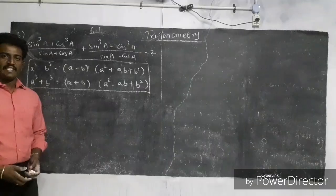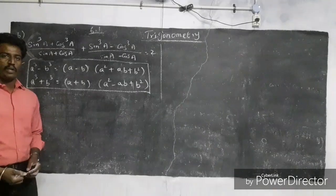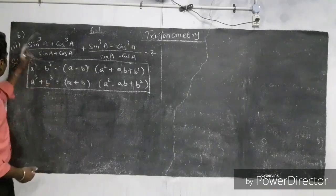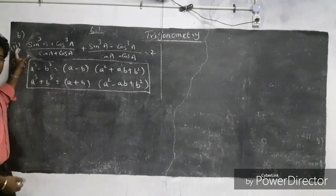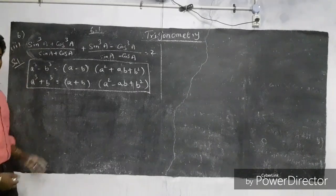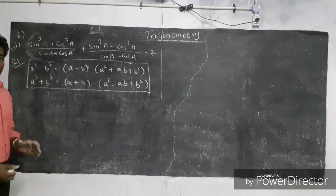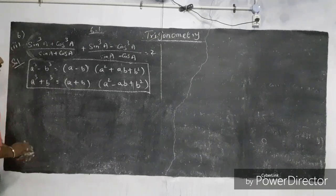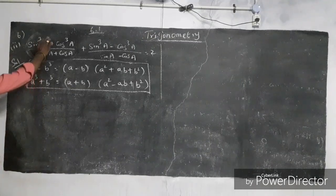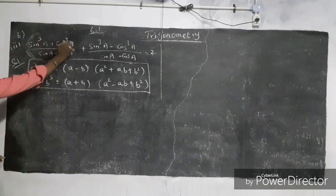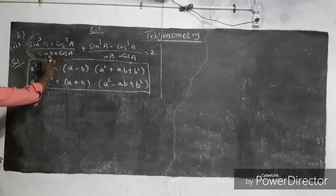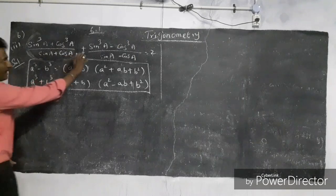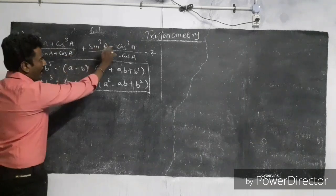What is the exercise? The exercise is 6.5. The second subdivision is 6. We have sin³A + cos³A divided by sin A + cos A.